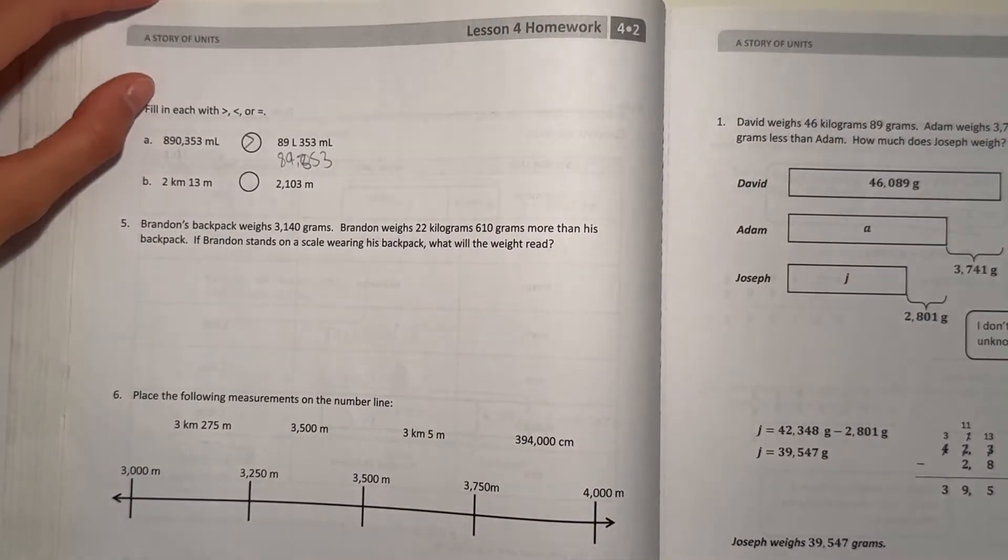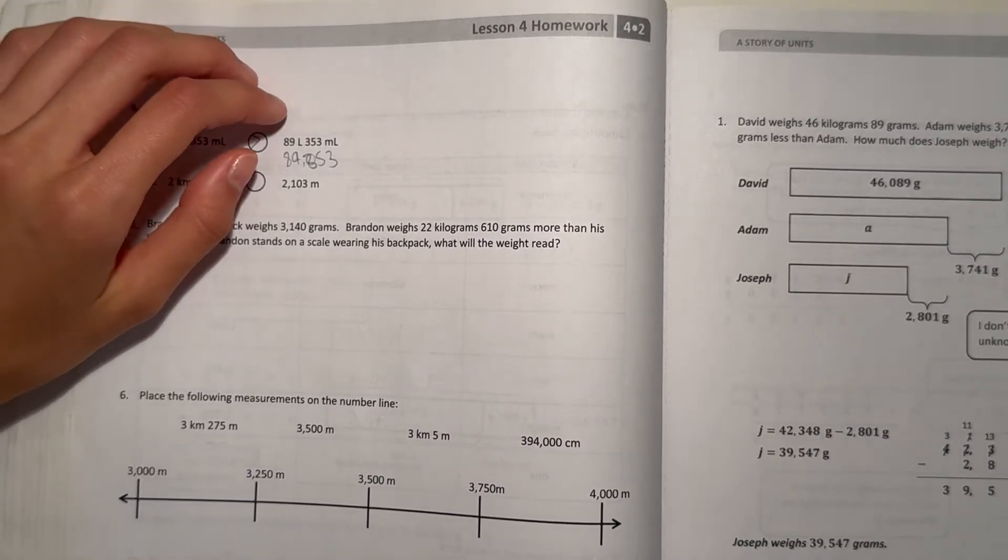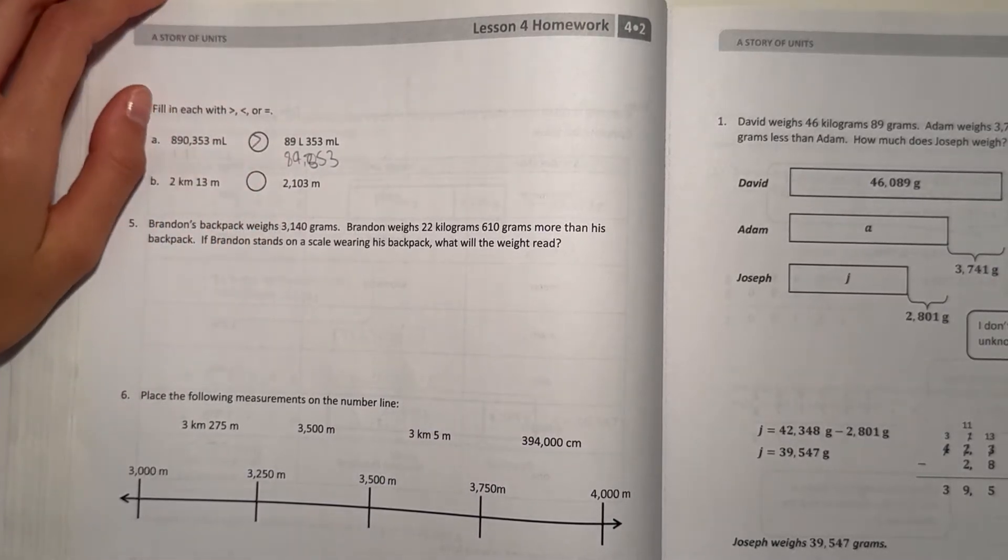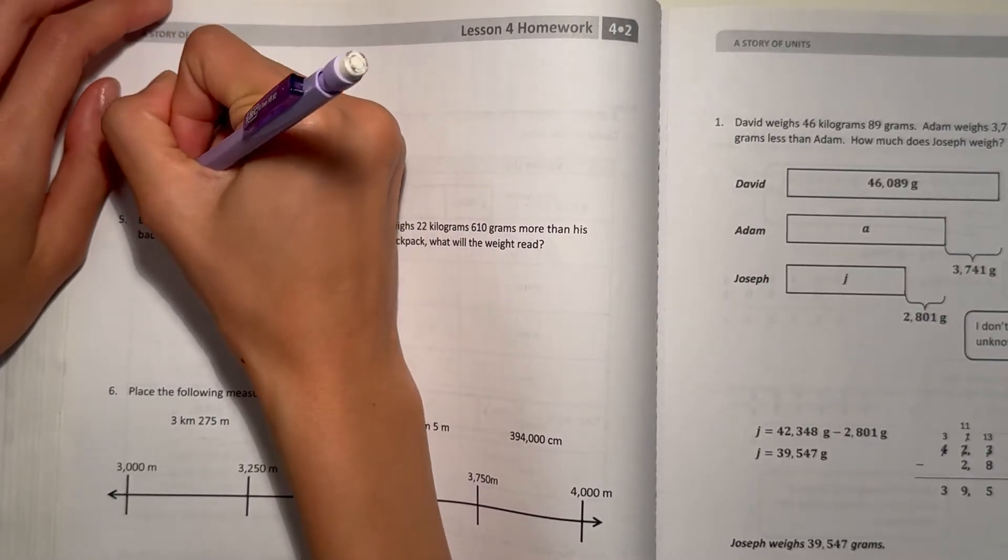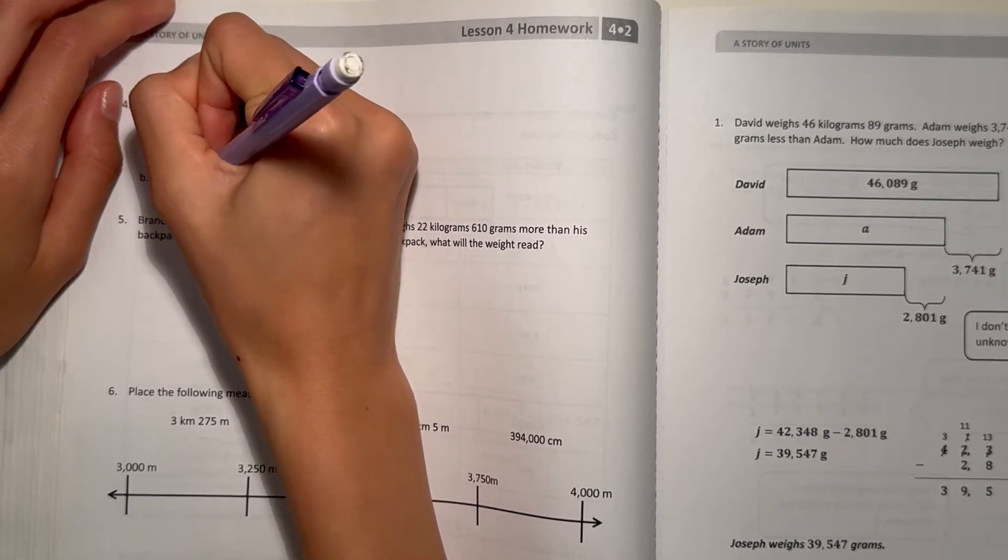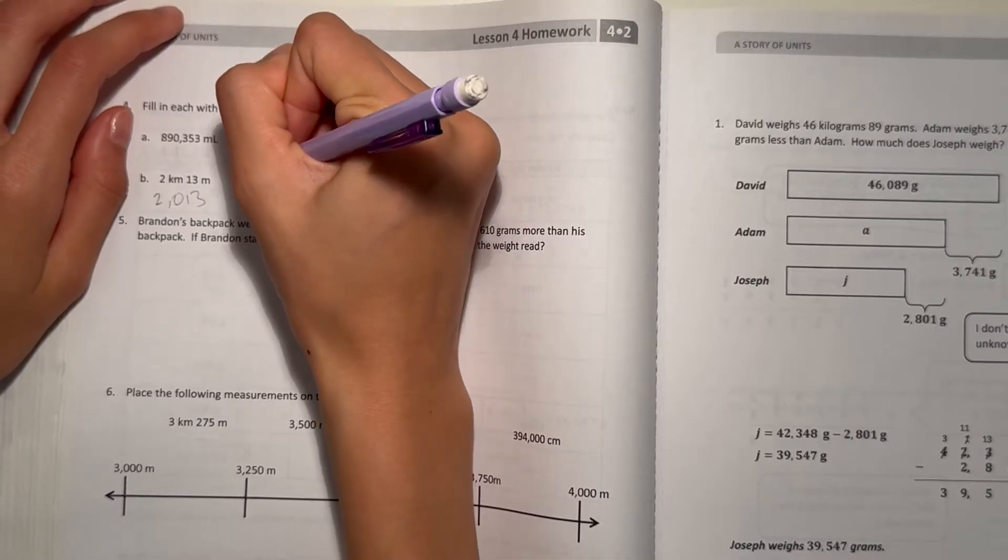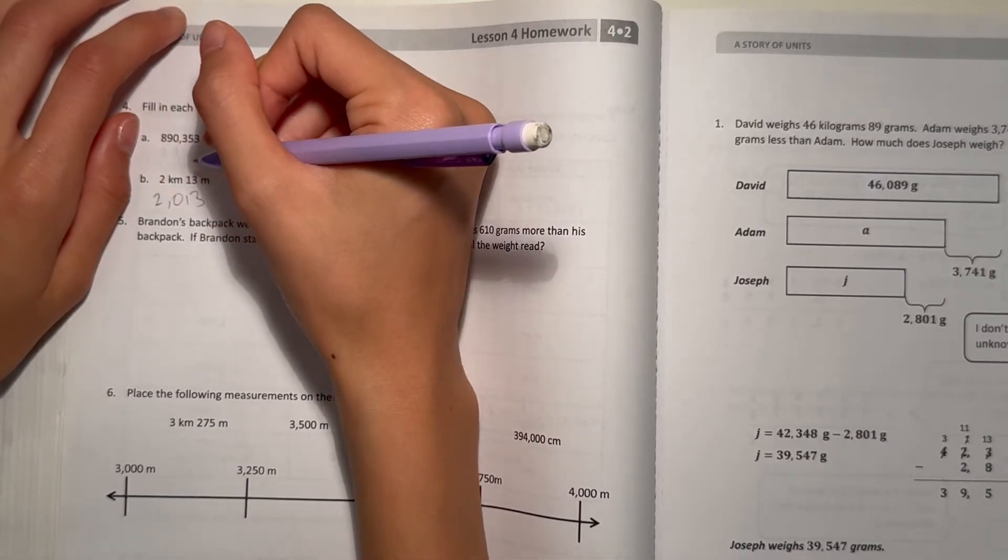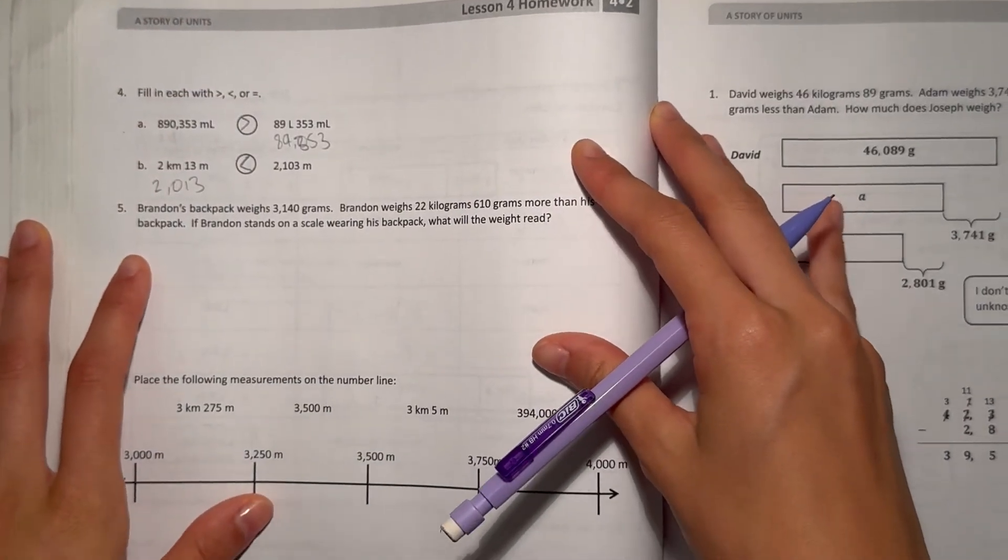And now B, two kilometers, 13 meters, versus 2,103 meters. So let's multiply this by 1,000, that's 2,000 meters, and then just 13 meters. So this number is obviously bigger. So 2,013 meters is less than 2,103 meters.